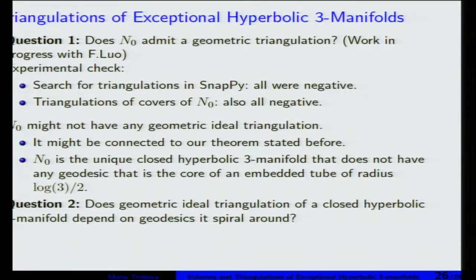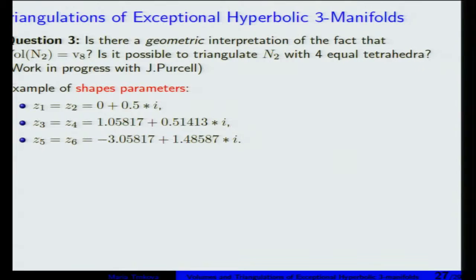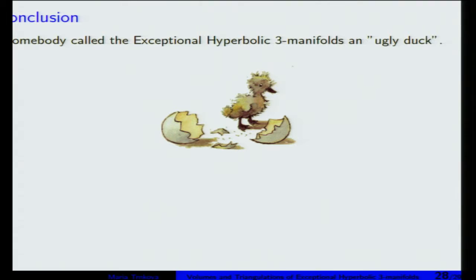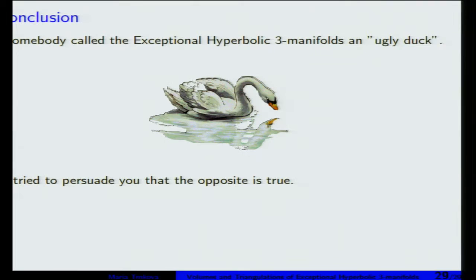Let's look at another manifold whose volumes are also equal. Is there some geometric interpretation of this fact? We know the Whitehead link complement is obtained by gluing faces of an ideal octahedron, and the same for the pretzel link. But can we get an octahedron here? Maybe it's not an octahedron, but can we triangulate it with flat tetrahedra? I've heard someone use the adjective 'bad' instead of 'exceptional,' but I've tried to show you that there are some nice properties and that these manifolds are actually very beautiful and worth looking at closely. Thank you.